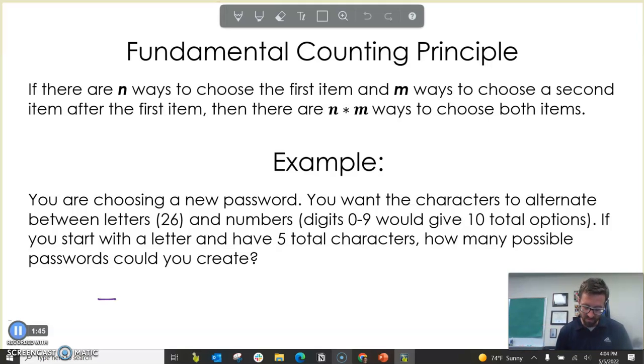So what we have is there's five decisions. Our tree diagram here would be massive. That's why the fundamental counting principle is so helpful for us. Let's say we have a letter, a number, a letter, a number, and a letter. We're alternating the way it described, and we're going to start with a letter. Our first decision, we have 26 total options. Then for our second option, which is a number, we have 10 total options. And then our third, we want a letter. Then our fourth, we want a number. And then our fifth, we want a letter. If I multiply all of those values, you find out that we have almost 2 million different passwords we could create with these restrictions.